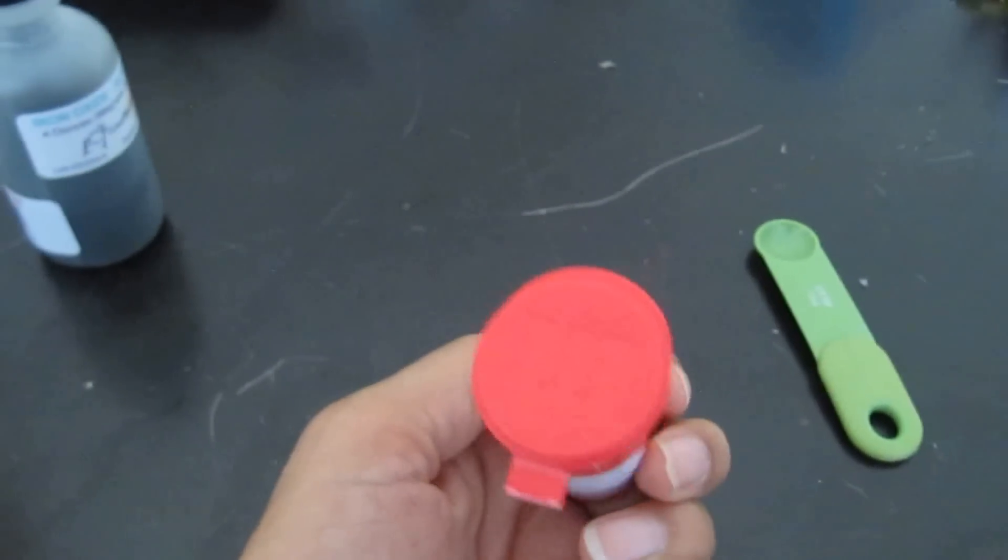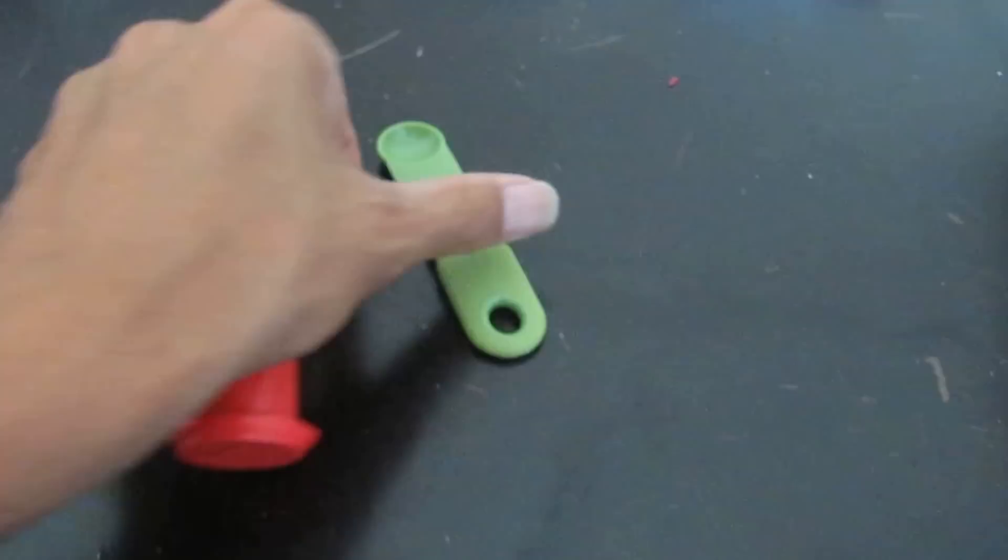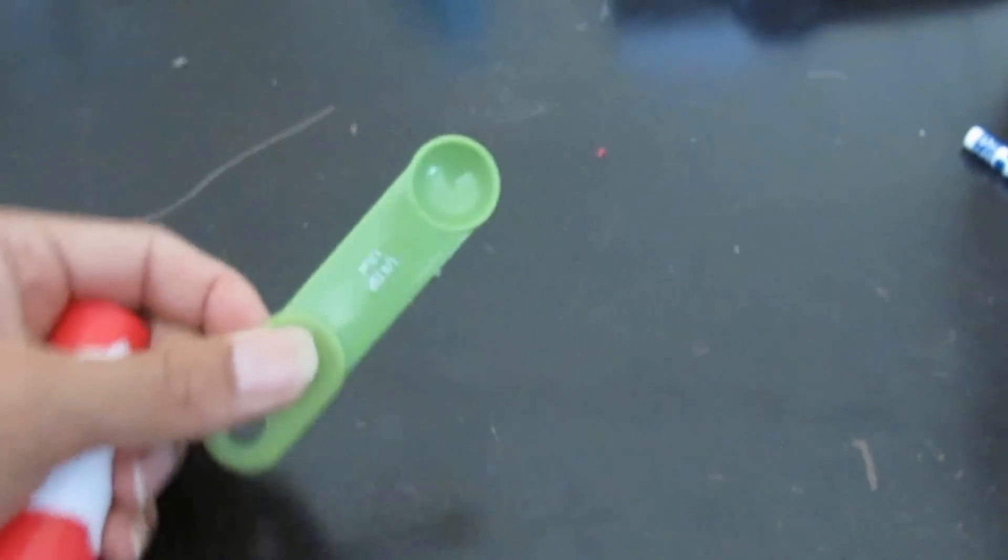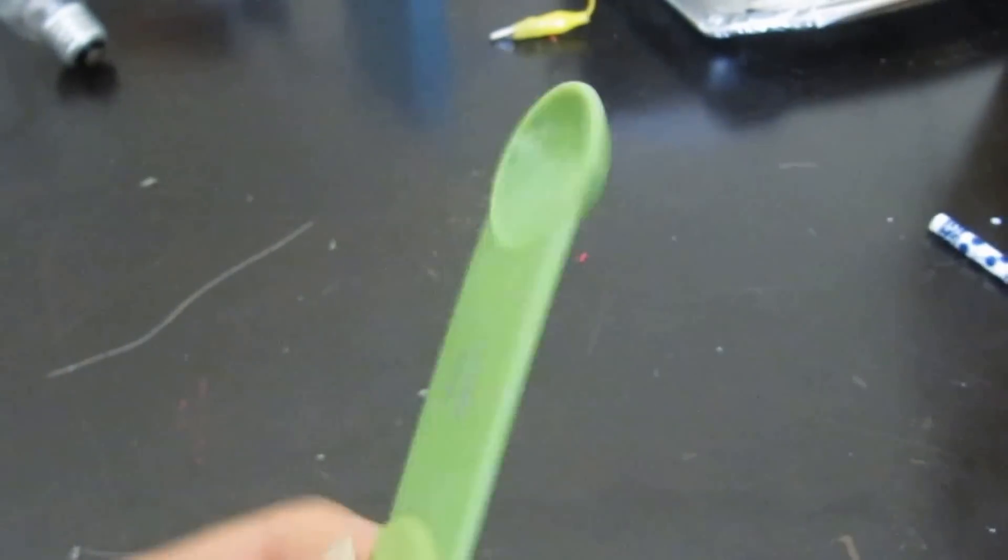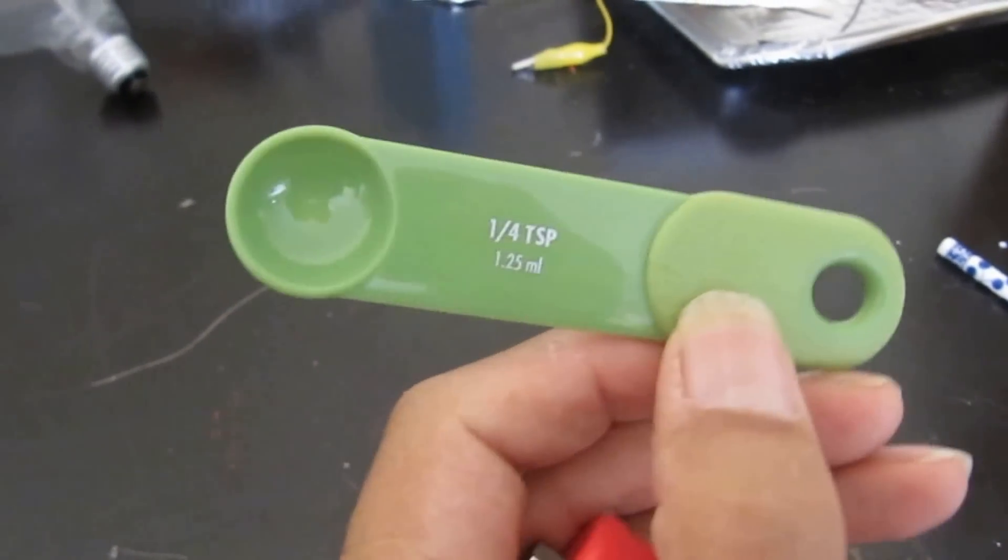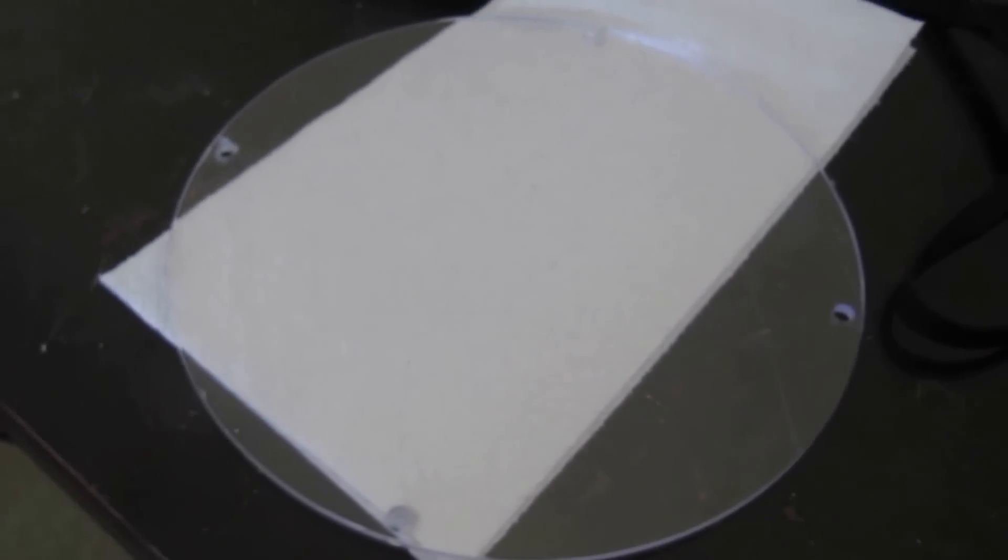So we're going to go ahead and mix some up, some ferrofluid up. What I have here, this is a half teaspoon measure, but you can use whatever size you want. I'm just going to use these. Actually, this is a quarter teaspoon. It's a quarter teaspoon measure, and I'm going to mix it up on this plastic disc here. Just kind of smoosh it all together, and you can watch me while I'm doing that.